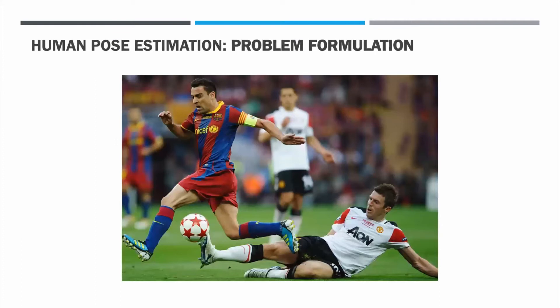Human pose estimation is a process of accurately localizing a set of key points that roughly define the pose of a person, given an RGB or grayscale image as an input. The landmarks correspond usually to the location of major joints of a human skeleton.